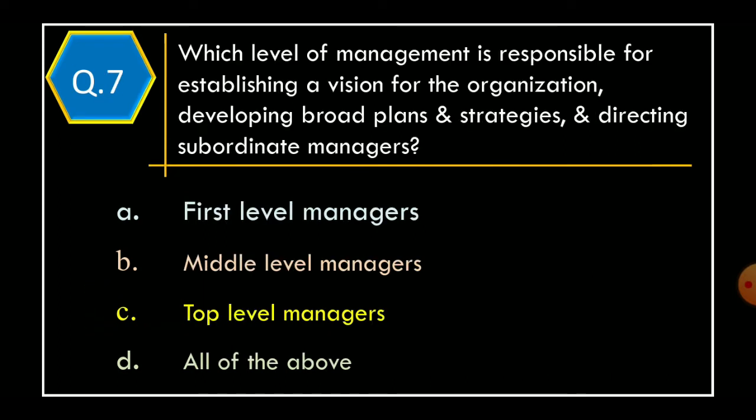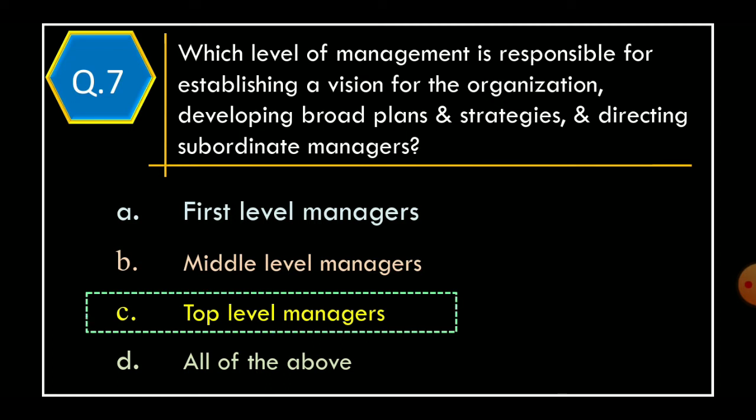Question 7. Which level of management is responsible for establishing a vision for the organization, developing broad plans and strategies, and directing subordinate managers? Option A: First level managers. Option B: Middle level managers. Option C: Top level managers. Option D: All of the above. The correct option is Option C: Top level managers.